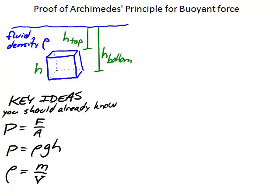Archimedes' principle is that the buoyant force acting on an object is equal to the weight of the fluid displaced by that object. The object is going to be occupying some volume that would have been occupied by the fluid if the object weren't in the way, and the buoyant force is equal to the weight of that displaced fluid. That's what Archimedes says, and we're going to do a mathematical proof to show that he's right.